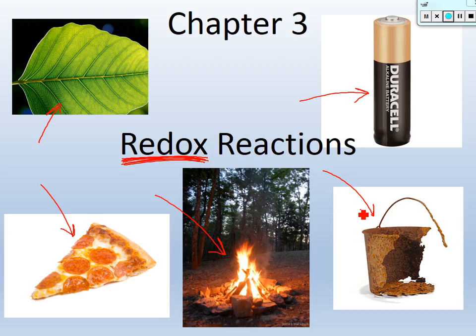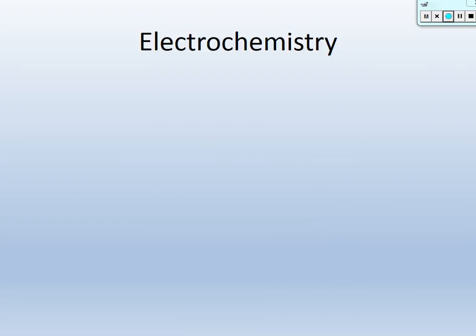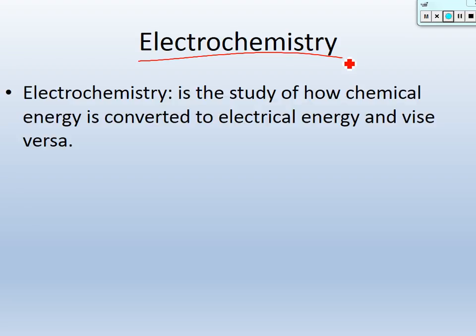I want to introduce what redox reactions are. So if you've got your chapter 3 guided notes out, please have them out and fill them in as we go through the upcoming slides. This chapter is about electrochemistry — the study of how chemical energy is converted to electrical energy and vice versa. We take chemicals with chemical energy and convert that into electrical energy, which is the flow of electrons. And then we do it in reverse, taking electricity and converting it back to chemical energy.